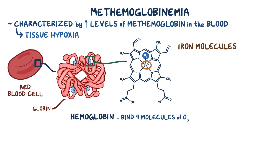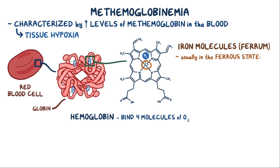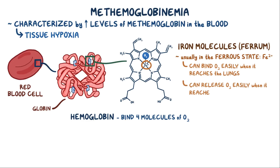The iron molecules, called ferrum in Latin, are usually in the ferrous state, which means that the iron atom has lost two electrons to form iron 2+. When iron is in the ferrous state, it can bind oxygen easily when it reaches the lungs, and release oxygen easily when it reaches the other tissues in the body that need oxygen.